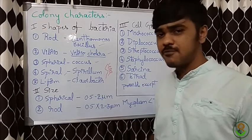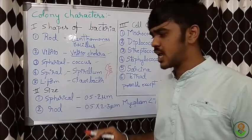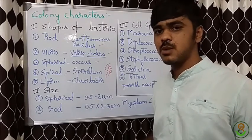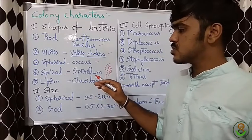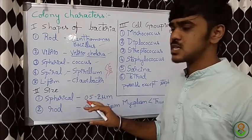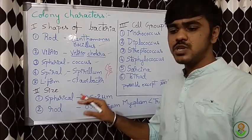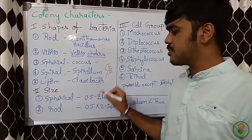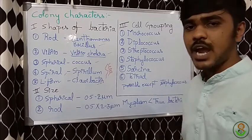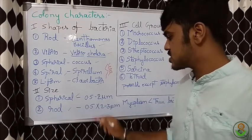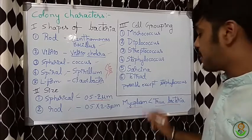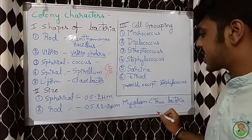L-form bacteria — an example is Clavibacter. The L-form is not the permanent shape of Clavibacter; during some stage of its life cycle it possesses a wall-less condition, which is called L-form bacteria. Based on size, spherical and rod forms vary — some are very large and some are small. Mycoplasma is smaller in size than true bacteria, and that is an important characteristic.